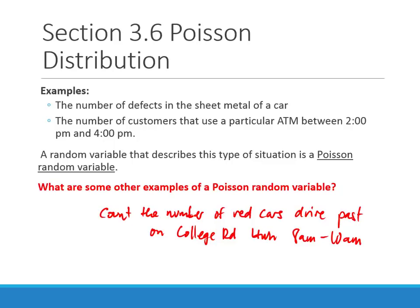Can anybody think of other examples that fit this framework? A student suggests: the number of people who get pepperoni pizza at a pizza place from 1 to 5. Absolutely — you're looking at a certain amount of time, you don't know how many people are going to come into the store, but you can still count how many people order a certain type of pizza. Those are the type of settings we can answer probability questions about in this section.